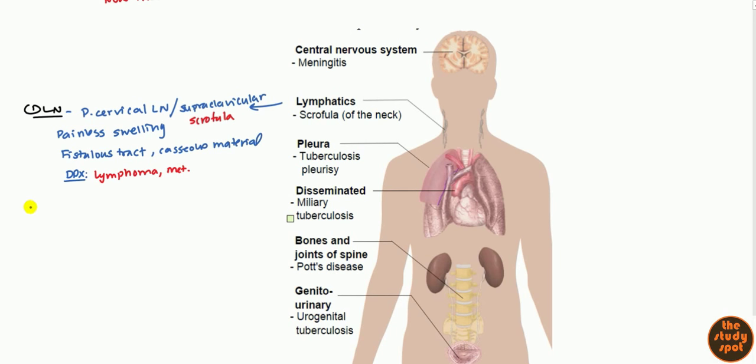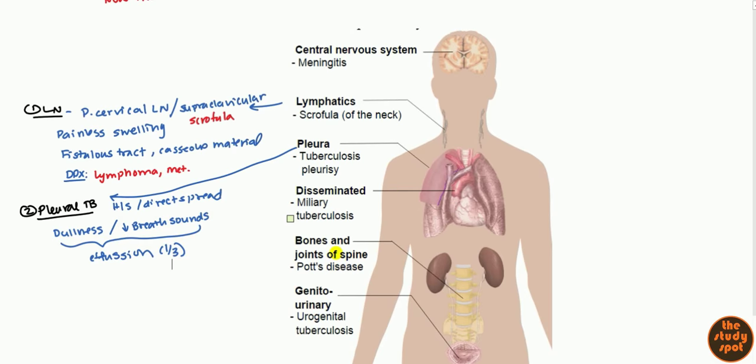Next, we'll talk about pleural TB, the second most common. This can either cause a hypersensitivity reaction or a direct spread from the lung parenchyma into the pleura. What are some findings? Because it's in the pleura, you'll get dullness and decreased breath sounds. We know that these two findings are most commonly associated with effusion. One-third of cases will have pleural effusion. If you get pleural effusion, what's the first step? Thoracentesis.